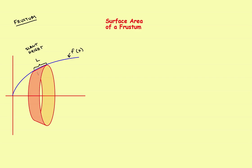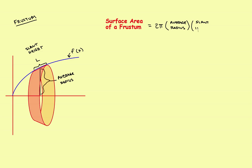A couple of things you're going to need. First, the slant height — the straight line from one end of the frustum to the other — we'll call that L. You're also going to need the average radius of the frustum. You've got a small radius and a larger radius; the average radius is halfway between the two. From a geometry book, the surface area of a frustum equals 2π times the average radius times the slant height.